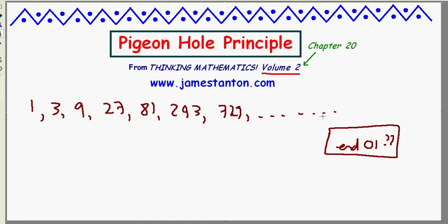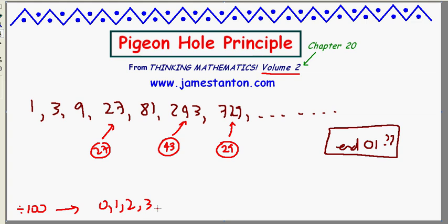I'm going to assign each number in this infinite list a label. And the label is going to be its remainder upon division by 100. So I'm going to divide each of these by 100. So for example, 243 upon division by 100 leaves the remainder of 43. So I'll label that 43. 729 leaves the remainder of 29. 27 leaves the remainder of 27. So if I do this for my infinite list, well, if I'm divided by 100, there's only these possible remainders. I've got the label from 0, 1, 2, 3, up to 99. So I only have 100 possible labels for infinite set of numbers.